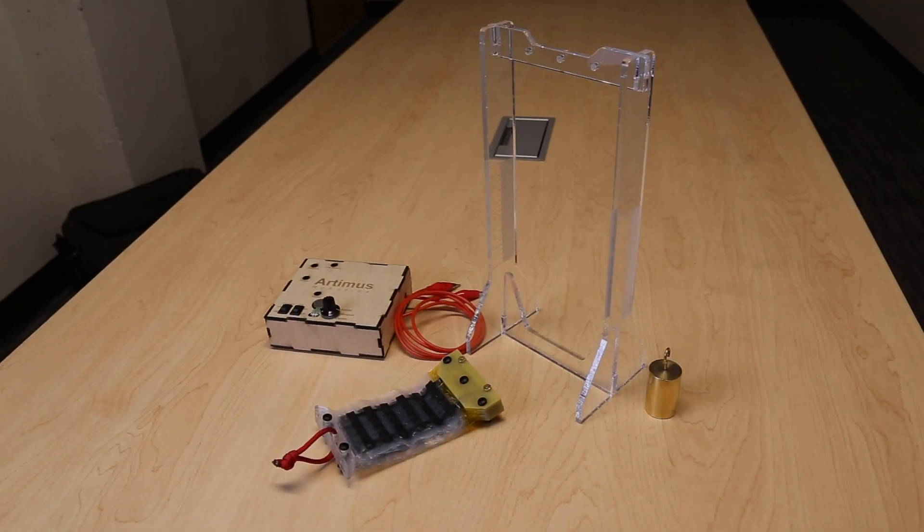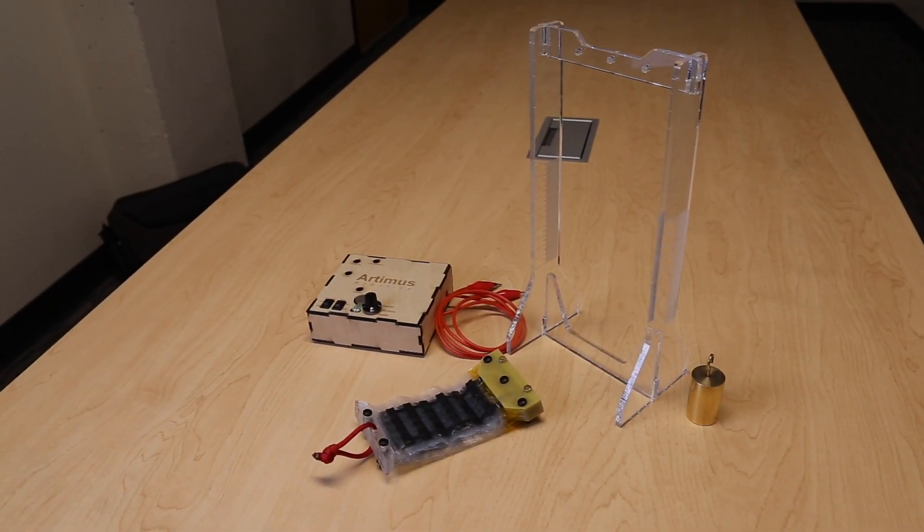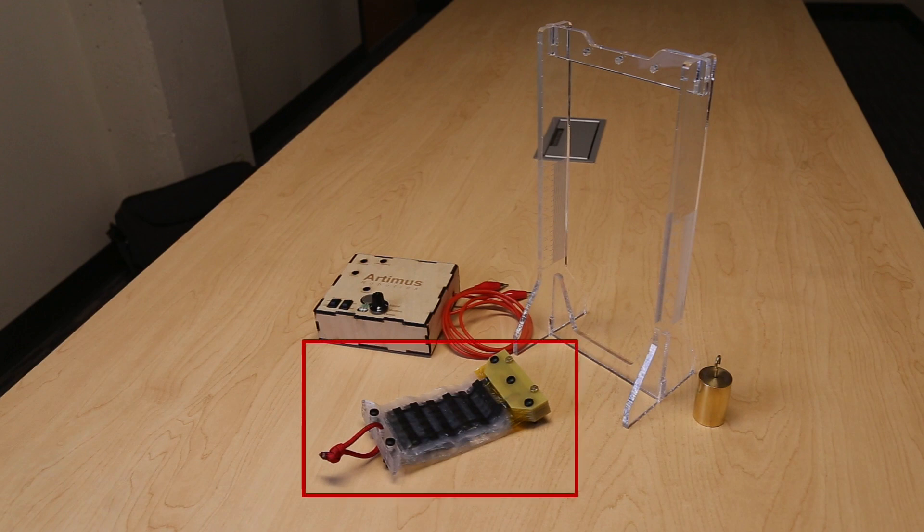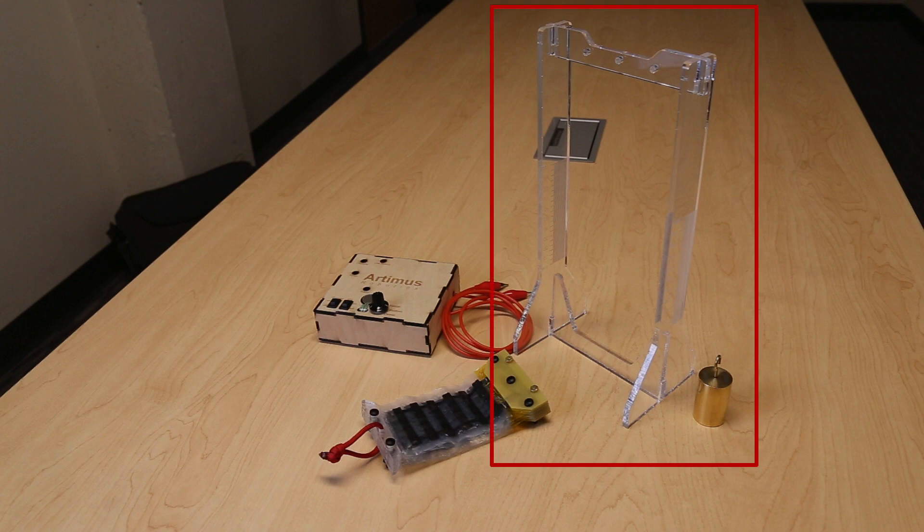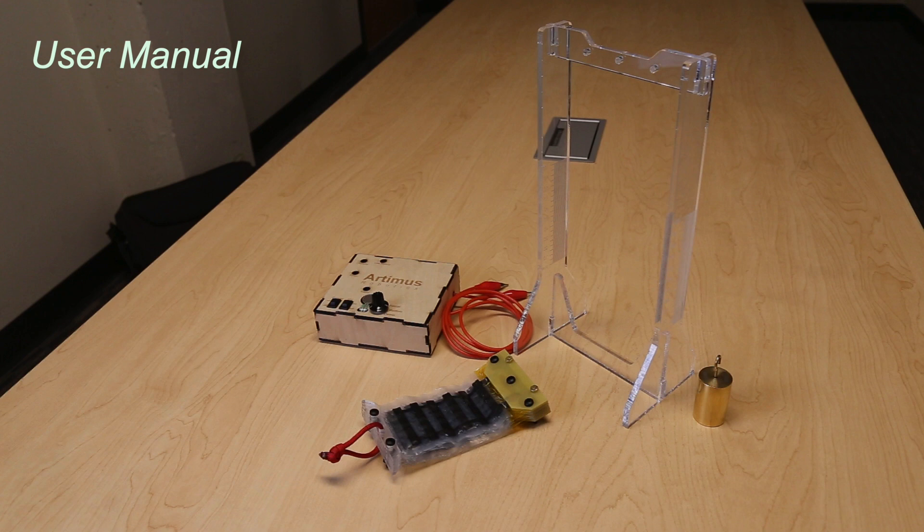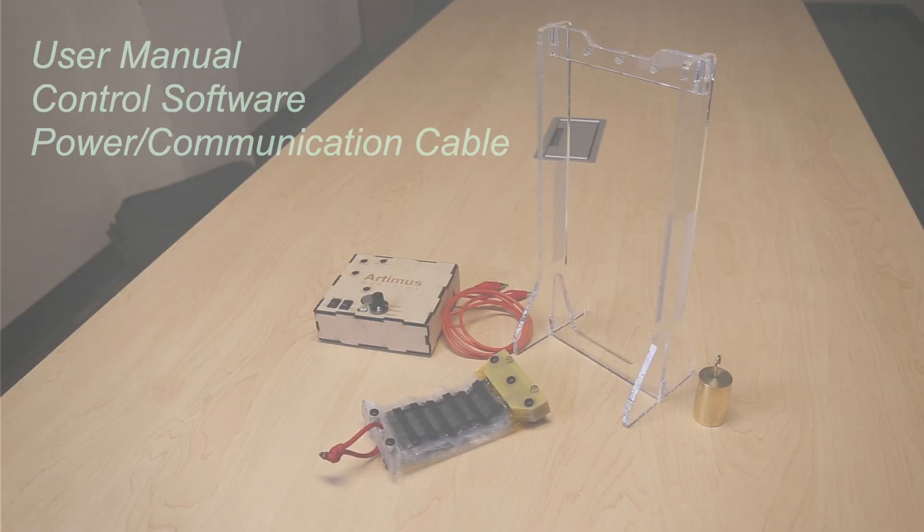The development kit comes with everything you need to use Hazel Actuators. This includes a stack of five Hazel Actuators, a portable power supply to activate the actuators, and peripheral accessories such as a stand and demonstration weight. Also included is a user manual, software for controlling the power supply, as well as a charging or control cable for the power supply.